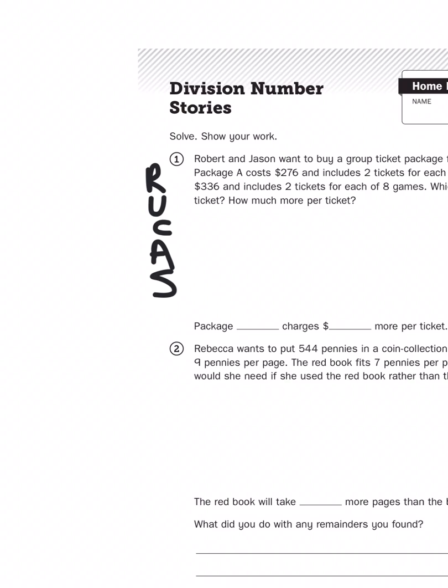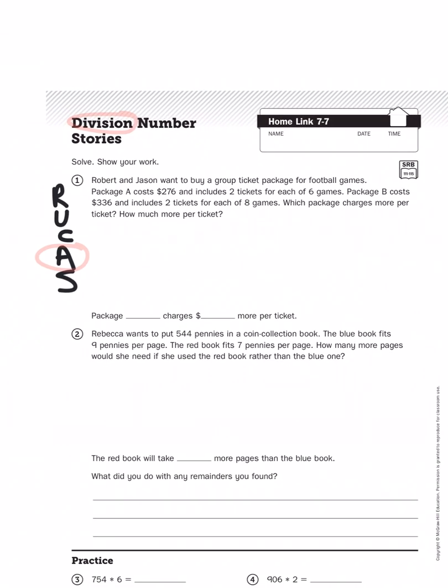I can already tell you what my action plan is going to be because the title of this activity is division. So there's got to be some division involved, right? But there might be something else. Let's see. So let's re-read this, and as I do, I'm going to circle important information, and I'm going to underline questions. Robert and Jason want to buy a group ticket package for football games. Package A costs $276 and includes two tickets for each of six games. Package B costs $336 and includes two tickets for each of eight games. Which package charges more per ticket? How much more per ticket?